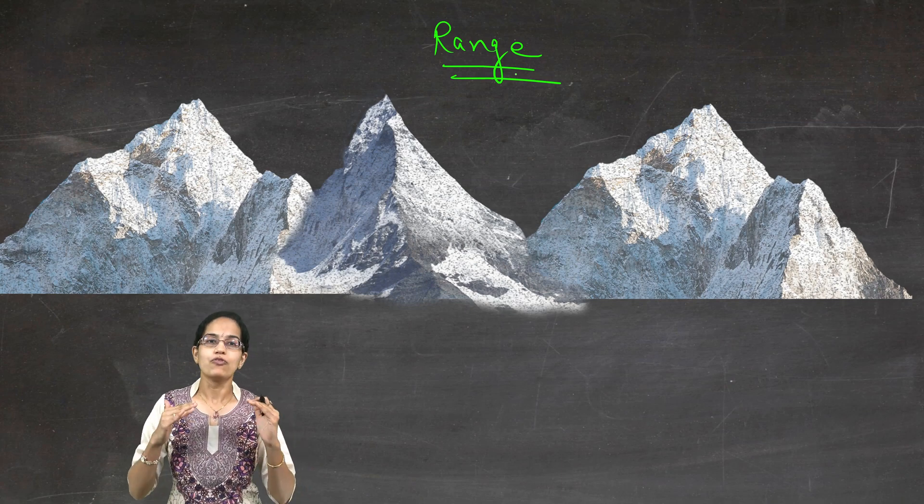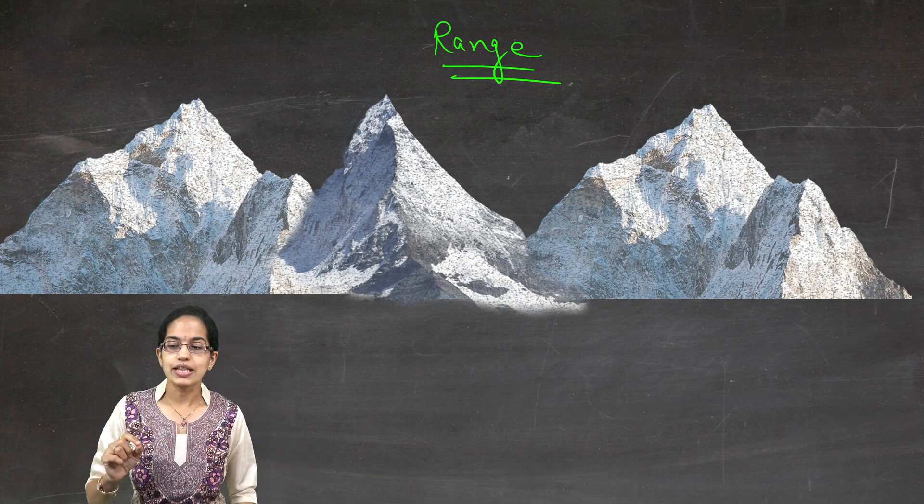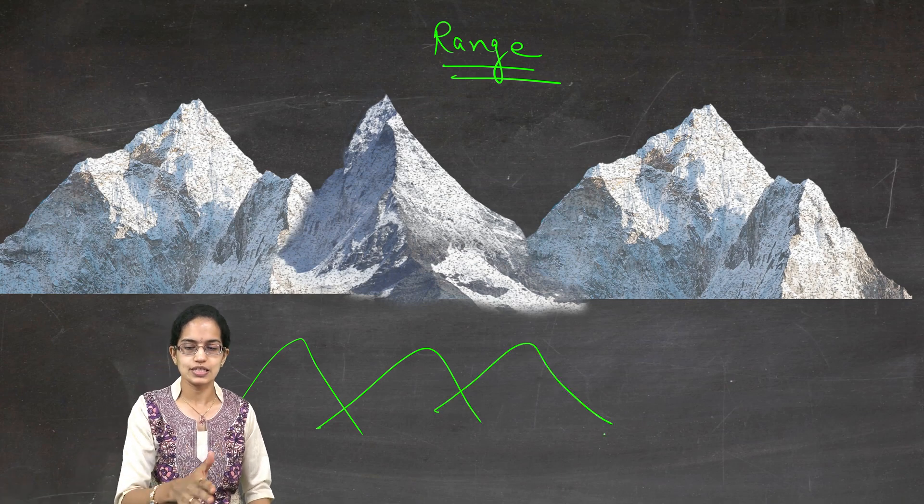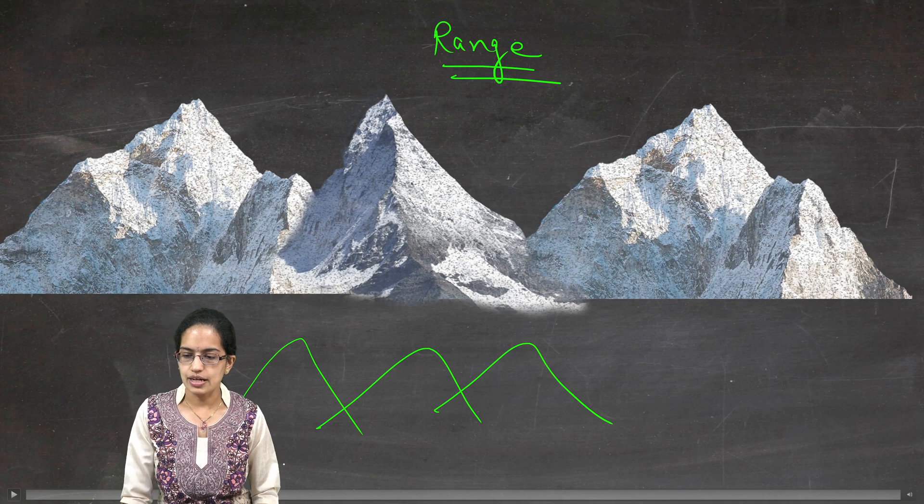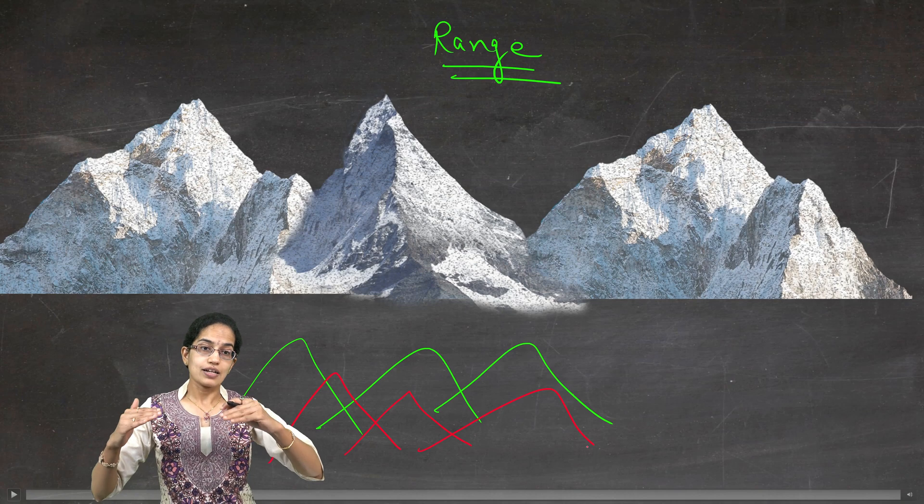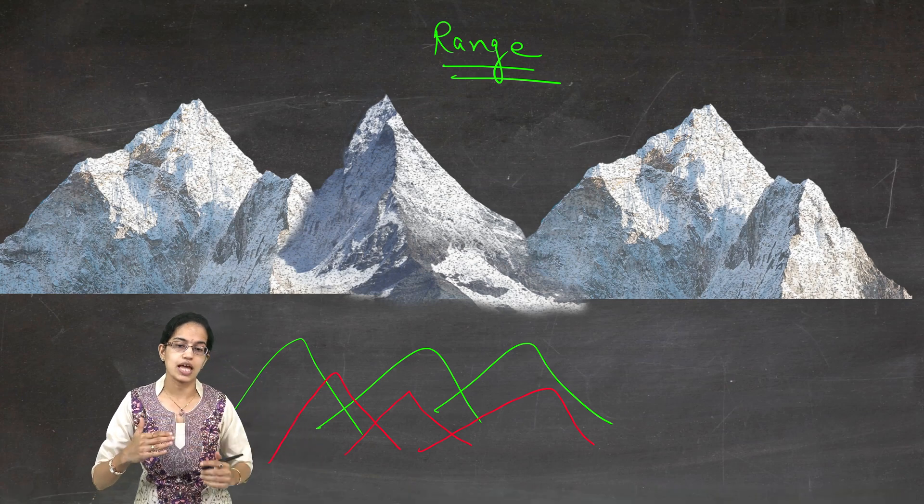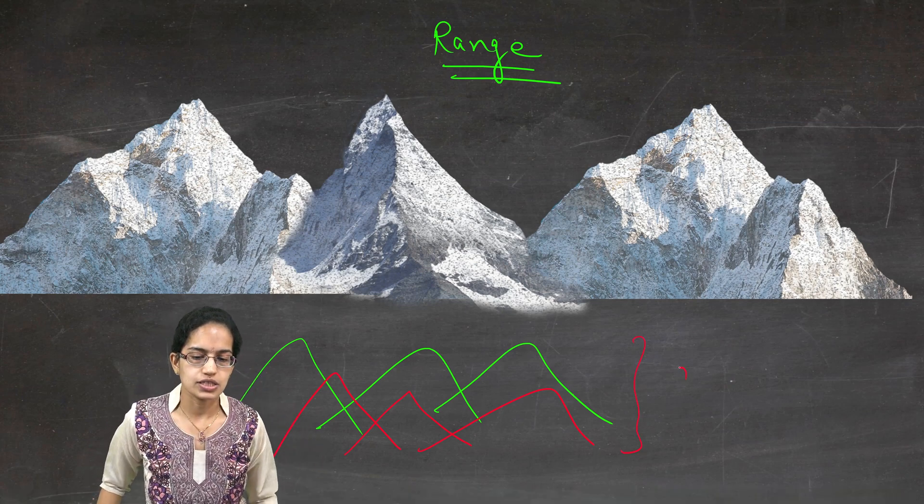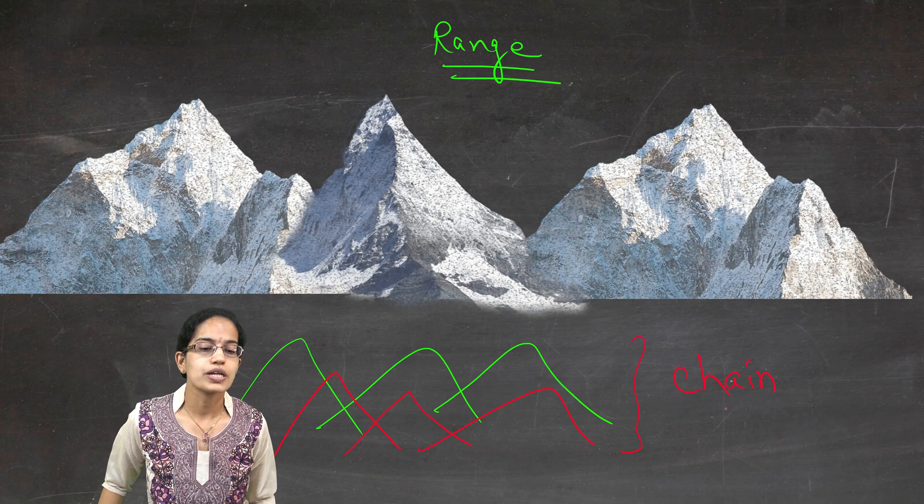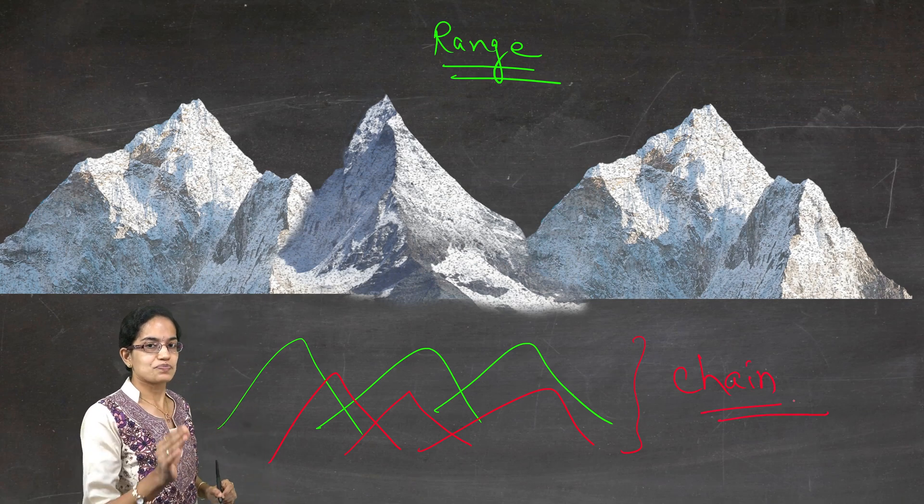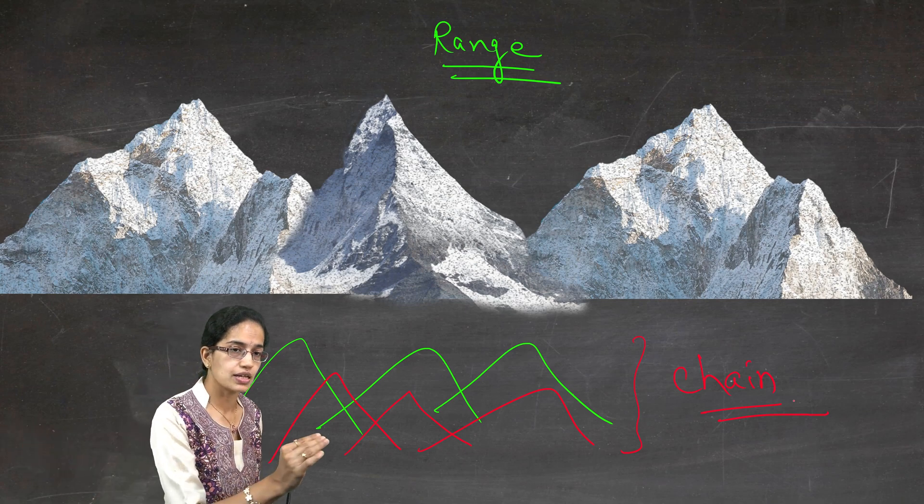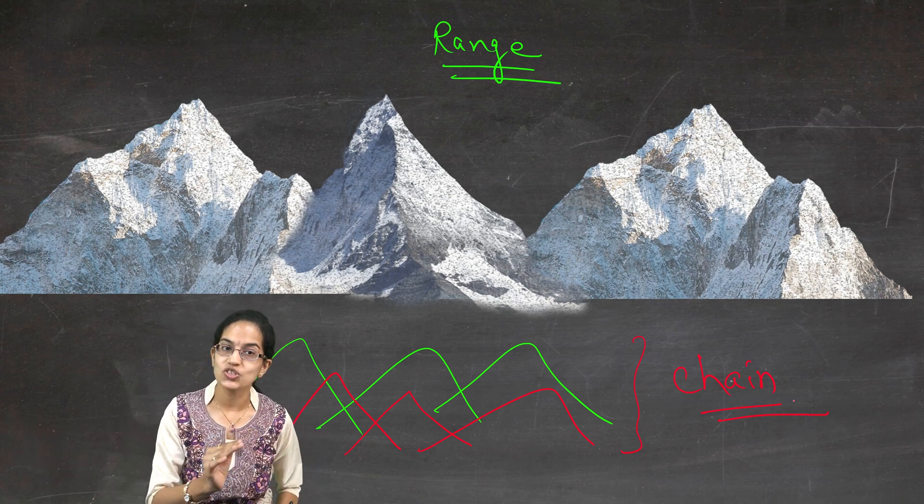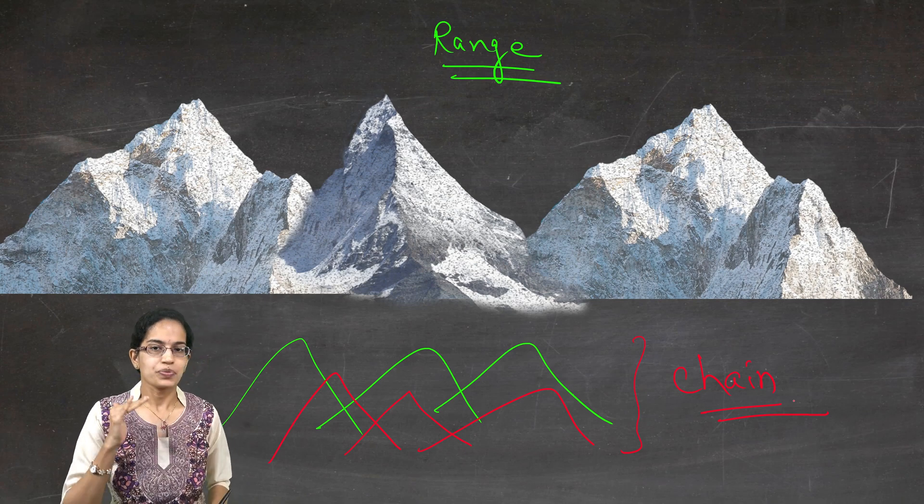A very important concept: when I have more than one range—let's say this is one of the ranges that I have drawn and let me bring in another color here and I have another range that I bring in here—when there are different ranges that are there, these ranges are known as mountain chain. We understand a single mountain, we understand a series of single mountain forming a range, series of range forming a chain.